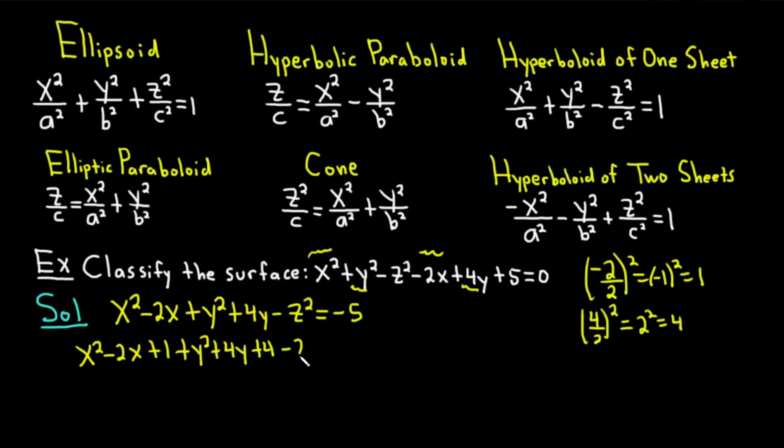Then we have this minus z squared. And this is equal to negative 5, but we're not done. A very common mistake here is that people forget to add what they added over here. So we added a 1 and we added a 4. So we really added a 5 to the left-hand side. We have to add a 5 to the right-hand side.